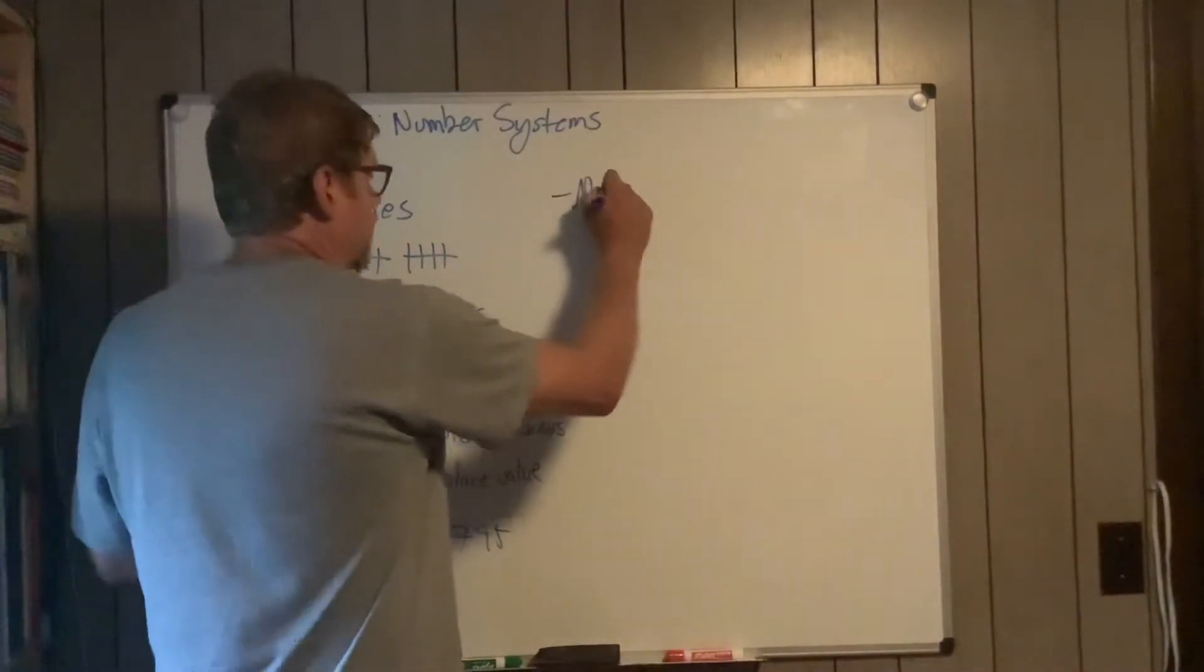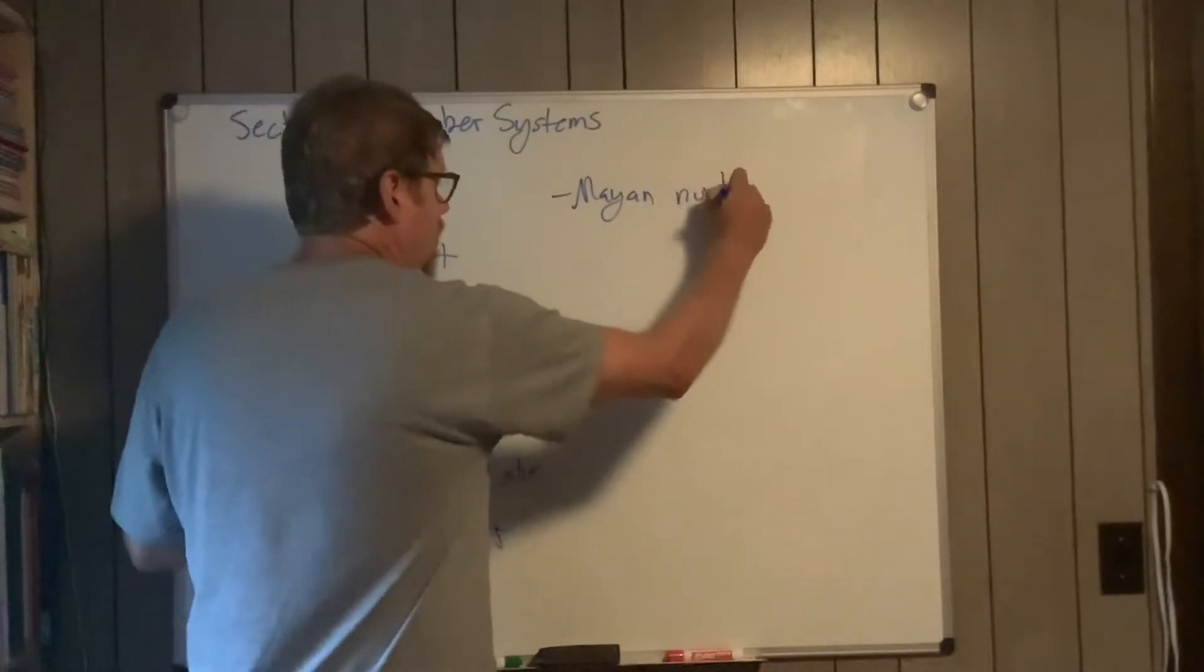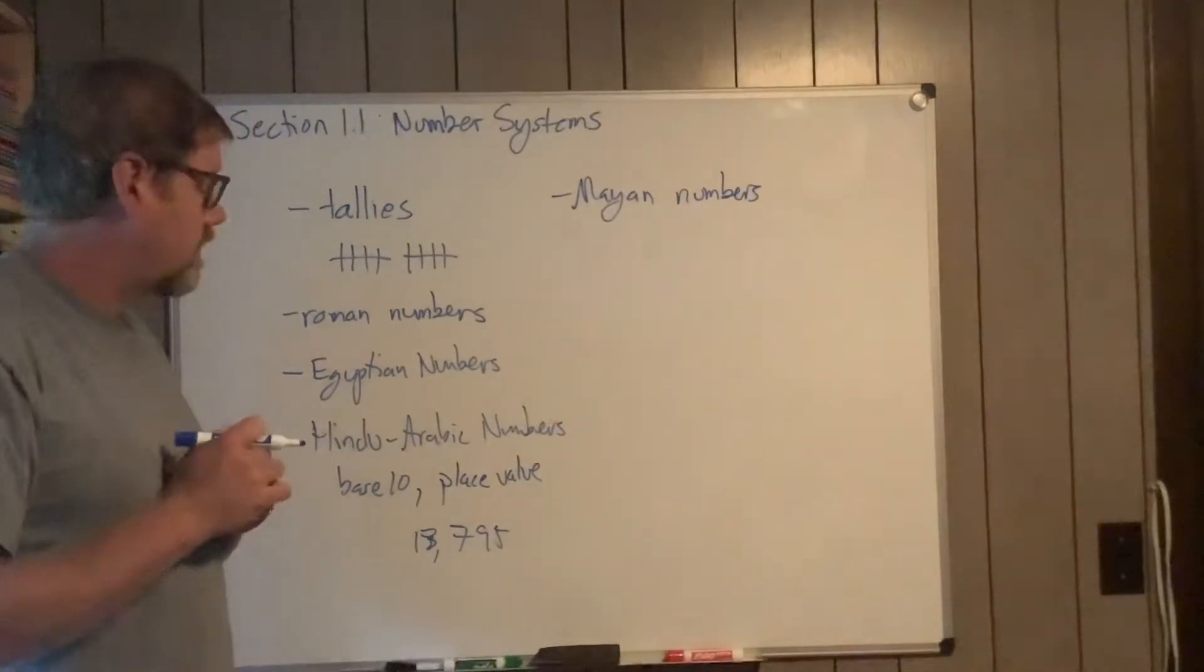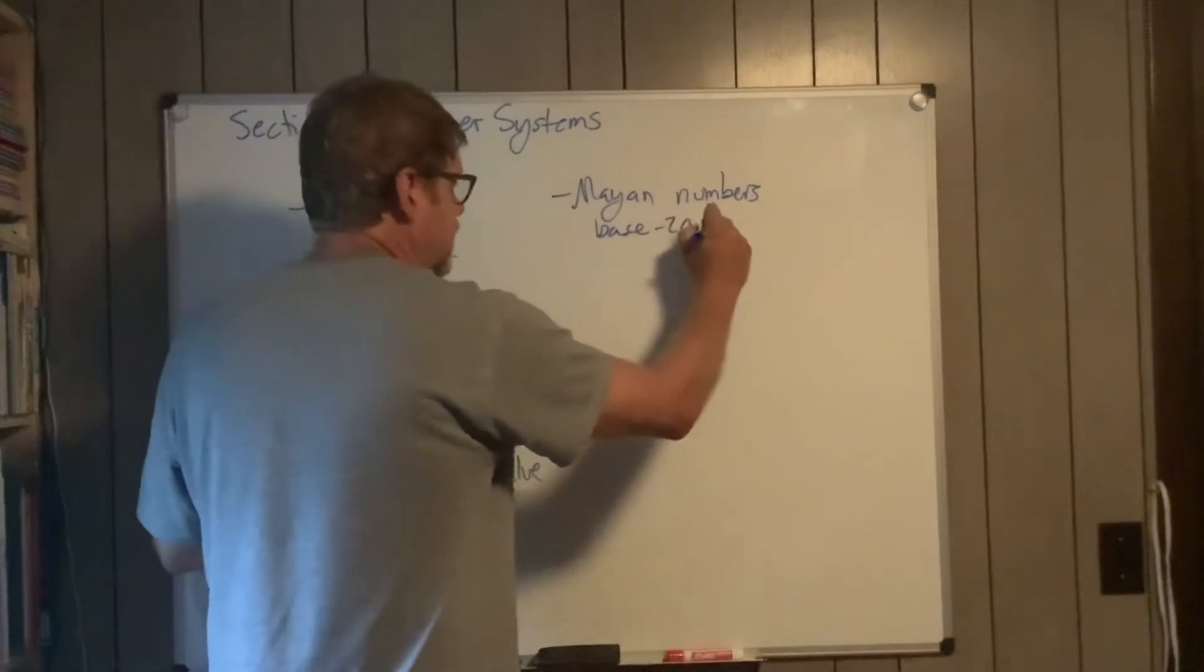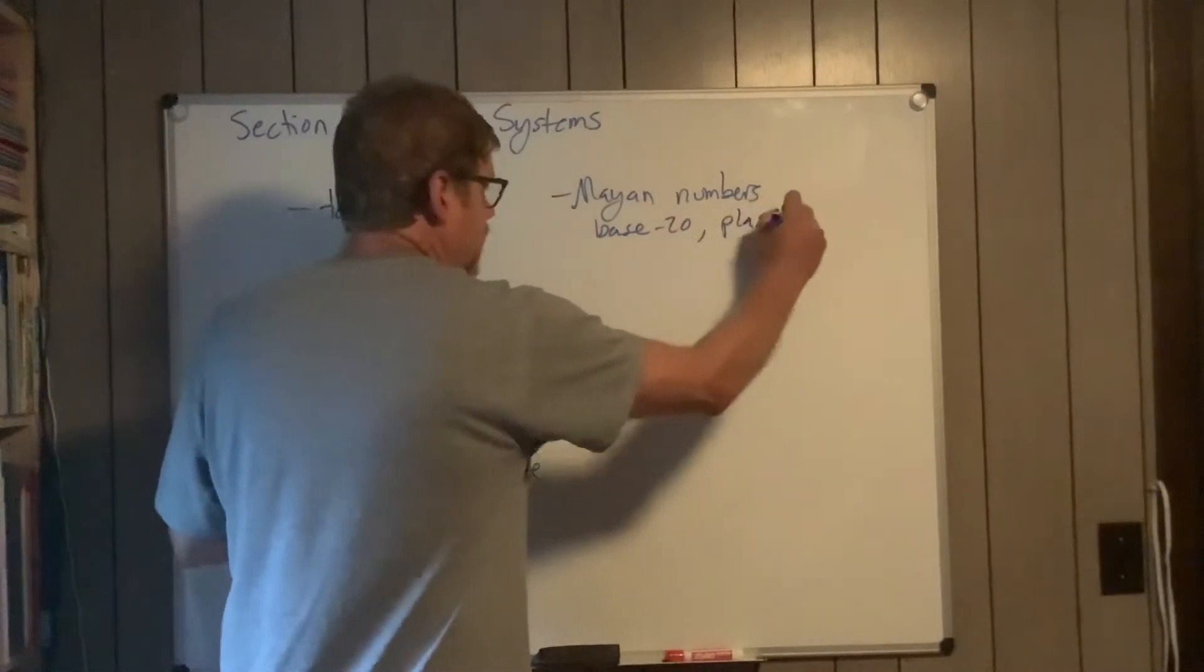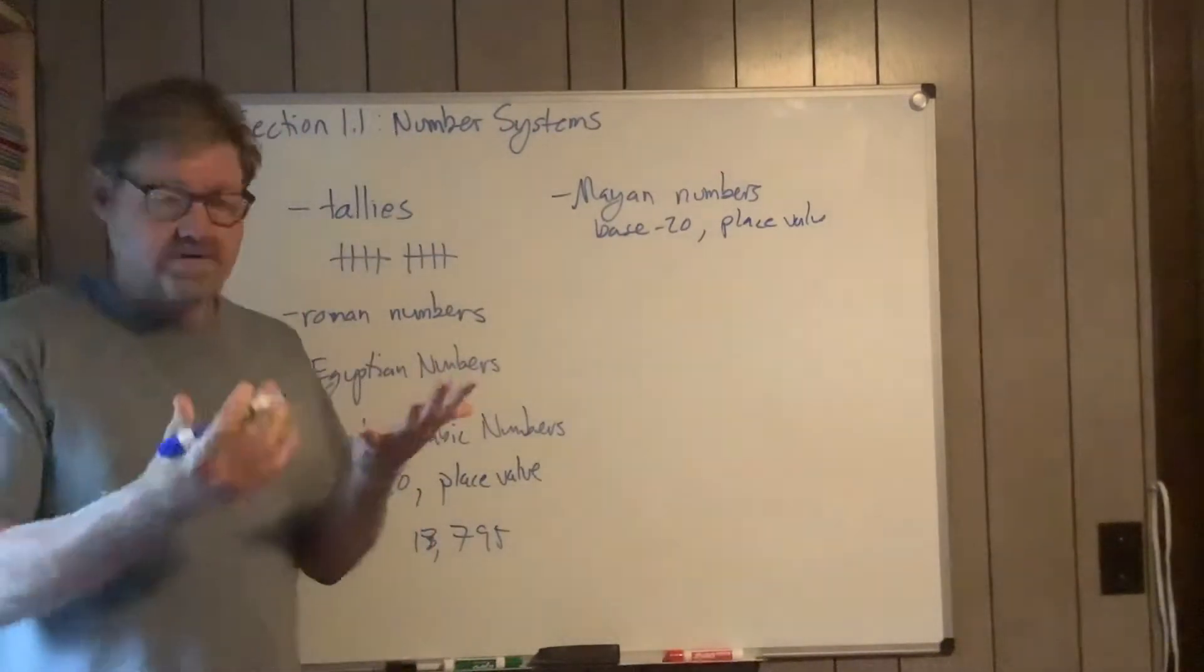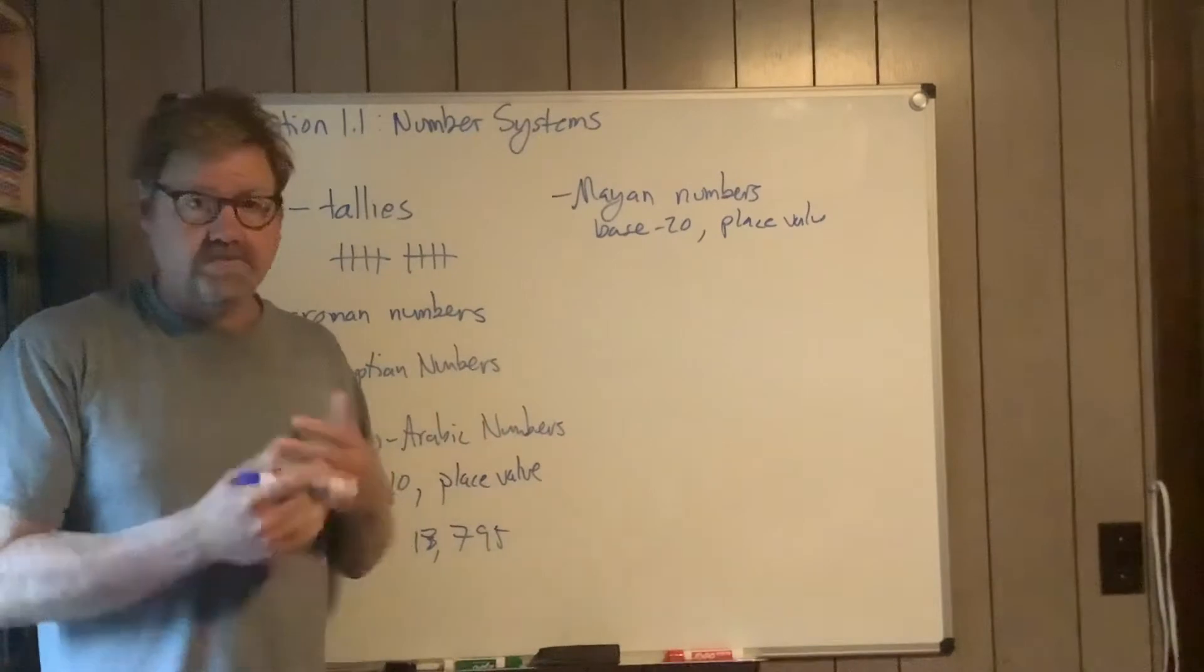Another number system that I've got in another video is called the Mayan numbers. These were numbers that the Mayans used. It's quite interesting, which is why I go over it. Base 20, but it's place value, so basically the same thing. Instead of using 10 digits, 0 through 9, they use 20 digits, which is a series of dots and lines.